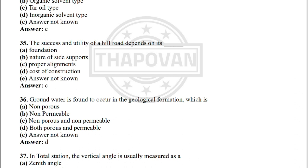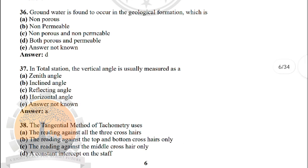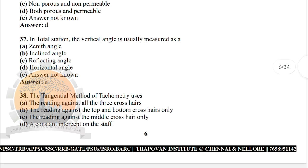Next: groundwater is found to occur in the geological formation which is — the correct answer is option D: both porous and permeable. Next: in total station, the vertical angle is usually measured as — the correct answer is option A: zenith angle.